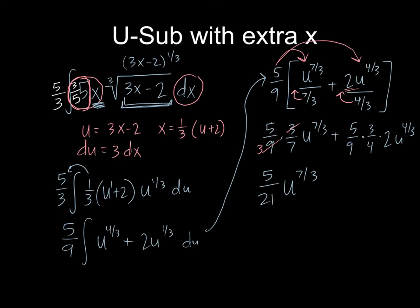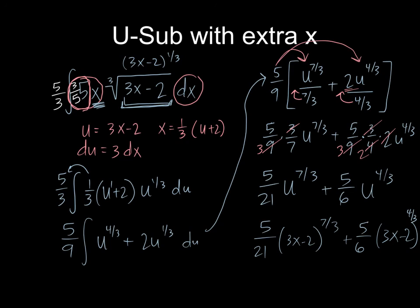In my second term, I can do the same thing, cross that out. I've got times two so I can get rid of that and that leaves me with five over six u to the four thirds. And as usual, we're going to substitute x's back in three x minus two to the seven thirds plus five sixths, three x minus two to the four thirds. So there's another extra x example.